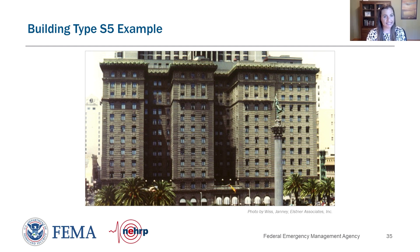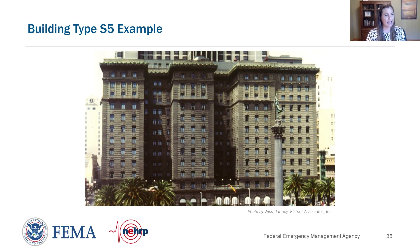Buildings that are newer and appear to have brick exteriors might just be a brick veneer — a steel frame with brick veneer acting as cladding rather than infill. A good indication that it's cladding rather than part of the lateral system is horizontal joints filled with flexible caulking, showing the building was designed to allow movement without imposing forces on the masonry. The seismic performance of S5 buildings is very similar to unreinforced masonry buildings, which will be discussed in the next module.